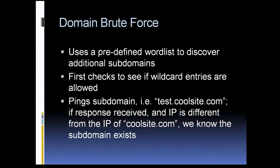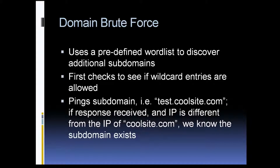Next, we've got domain brute force. The tools will take a predefined word list, start at the top of the list, and work their way down to the bottom, pinging each of the subdomains. For example, here we've got test.coolsite.com. If you get a response back and the IP for that subdomain is different from the IP of coolsite.com, then you know that that subdomain exists — and here's another way you can find systems to add to your attack scope.